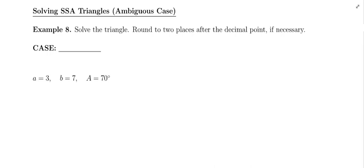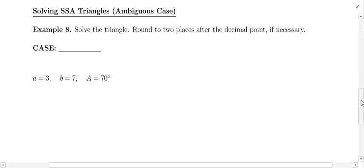At the bottom of page six, we're going to solve side-side angle triangles, the ambiguous case. In example eight, it says solve the triangle, round to two places after the decimal point if necessary. All we're told is that for this triangle, side length a is three, side length b is seven, and angle A measures 70 degrees.